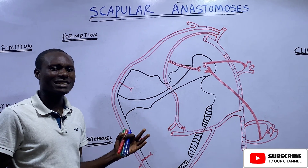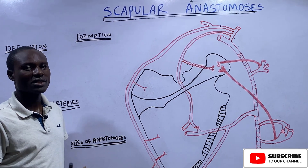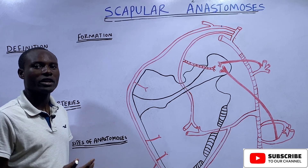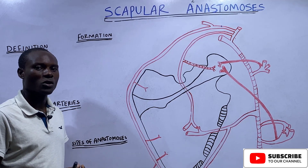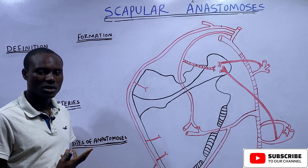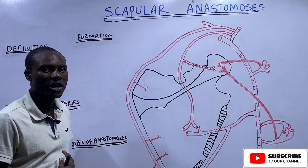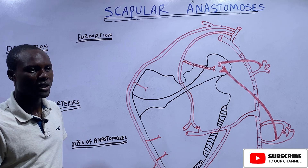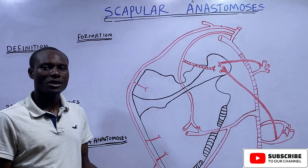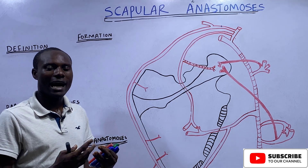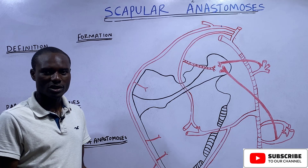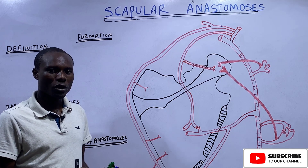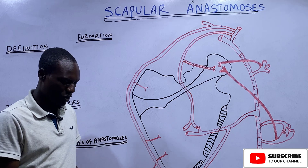So what is an anastomosis? An anastomosis is defined as a network of vessels. It could be a network of arteries — in that case you call it an arterial anastomosis. It could be a network of veins — in that case you call it a venous anastomosis. And it could be between arteries and veins — you call it an arteriovenous anastomosis. So the Scapular Anastomosis is purely an arterial anastomosis.